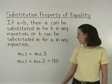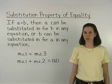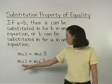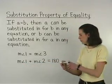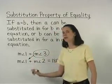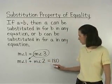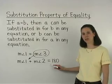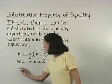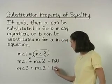Since we know that the measure of angle 1 equals the measure of angle 3, the Substitution Property of Equality allows us to replace the measure of angle 1 in our second equation with the measure of angle 3. So instead of the measure of angle 1 plus the measure of angle 2 equals 180 degrees, we can change the equation so that it now reads: the measure of angle 3 plus the measure of angle 2 equals 180 degrees.